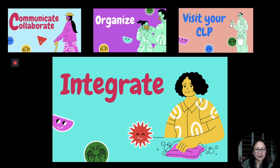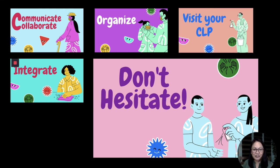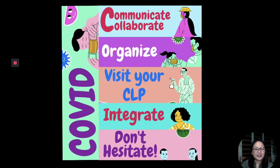Check your CLP and then integrate all these things and find out what will best work for your class. I — integrate. Don't hesitate to experiment. If you try a new thing and then you fail, celebrate that and say, 'I failed, so I'll try another strategy.' We try to celebrate failures as much as we celebrate our successes. So: communicate, organize, visit your CLP, integrate, and don't hesitate.